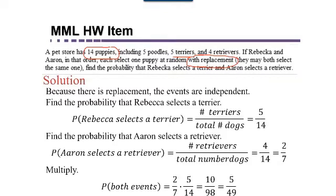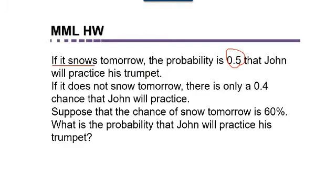So the probability that Rebecca selects a terrier and Aaron selects a retriever is five forty-ninths. The most important concepts here are: number one, 'and' means multiply; and number two, 'with replacement' means independent events.